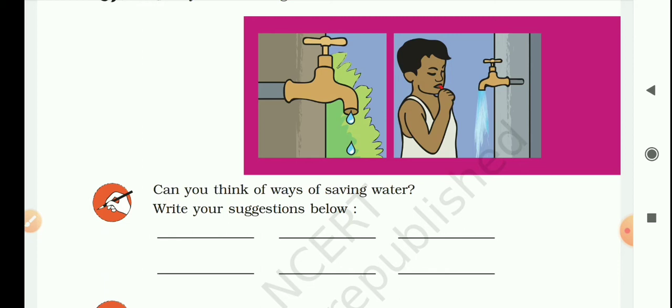Third is water left after washing clothes can be reused for washing toilets or washrooms. Fourth is whenever there is any leakage or damage in the tap or pipeline, it should be repaired earliest. It will help to stop the wastage of water.